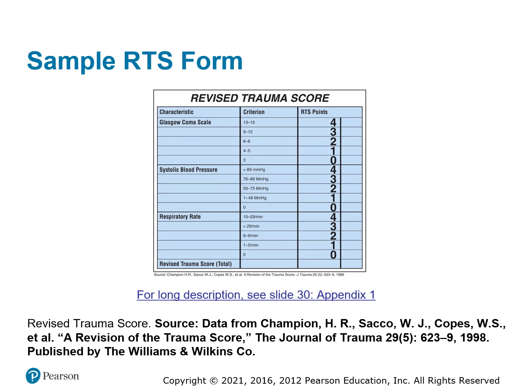Here's the Revised Trauma Score format: Glasgow Coma Scale 13–15 gets a 4, 9–12 gets a 3, 6–8 gets a 2, 4–5 gets a 1, and 3 gets a 0 — remember 3 is the lowest possible. Systolic blood pressure 90 or above gets a 4, 76–89 gets a 3, 50–75 gets a 2, 1–49 gets a 1, and no blood pressure or cardiac arrest gets a 0. Respiratory rate 10–29 gets a 4, 30 or greater gets a 3, 6–9 gets a 2, 1–5 gets a 1, and 0 gets a 0.